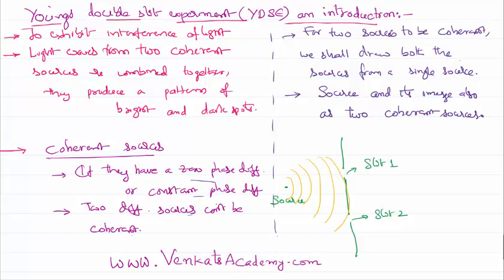The light reaches the slits at a particular point — what we have here is nothing but a wavefront. An identical wavefront is hitting the slits. From there onwards, these slits start behaving like sources according to Huygens' principle, as explained in previous video lessons — every point on the wavefront acts like a source. Thus these two slits start behaving like sources, and being drawn from the same source, they behave like coherent sources and exhibit interference.